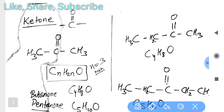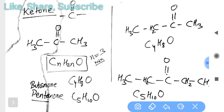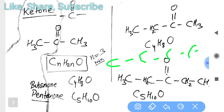You have to understand how to balance them, because carbon is tetravalent — it has four valencies — so you have to satisfy all four valencies. The double bond uses two valencies of that carbon; the remaining two are satisfied by other bonds. For butanone, the formula is C₄H₈O, and for pentanone it is C₅H₁₀O. You can make these structures easily by placing one, two, three, four, five carbons and satisfying the valency of each carbon.